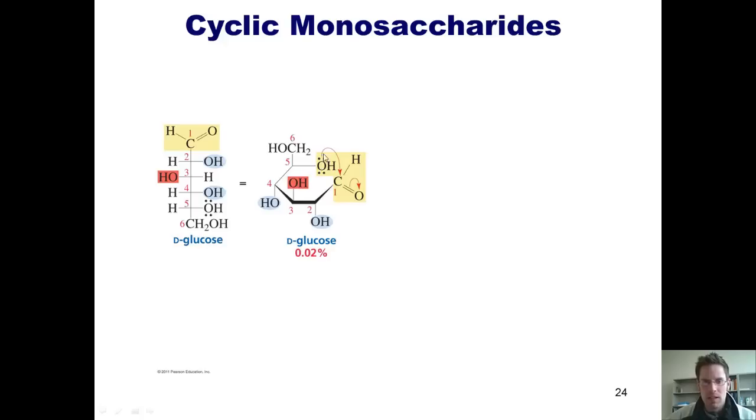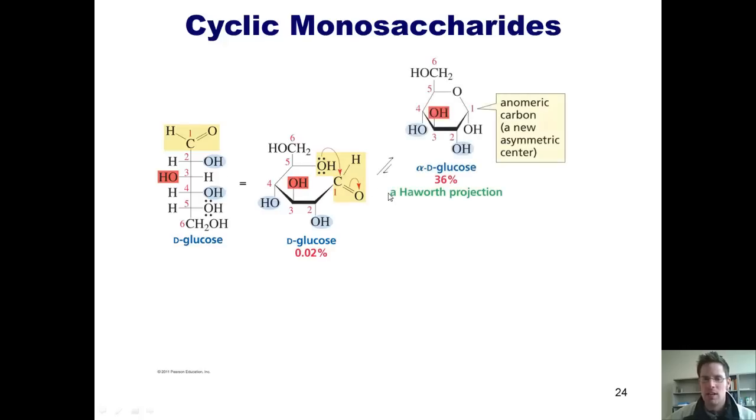coming here, thrusting its electrons into this carbonyl carbon and having those electrons go up onto the oxygen, the O minus then tearing a proton off of that OH to give me this ring structure. You'll notice this is not a chair structure. This is a slightly different way of drawing a ring structure. This is called a Haworth projection.